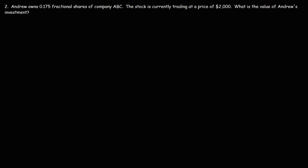Let's try another example. Andrew owns 0.175 fractional shares of company ABC. The stock is currently trading at a price of $2,000. What is the value of Andrew's investment? The value of the investment is equal to the price of the stock times the number of fractional shares the person owns.